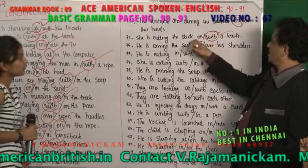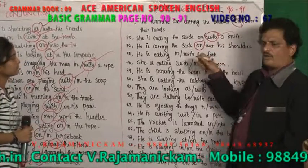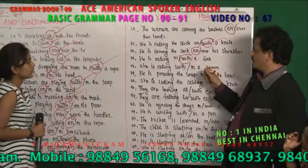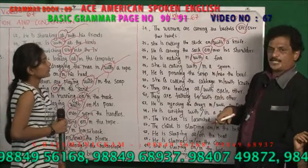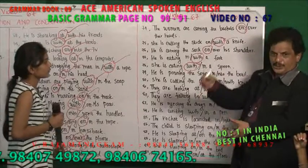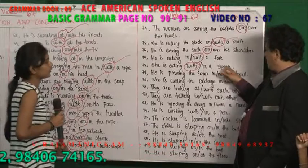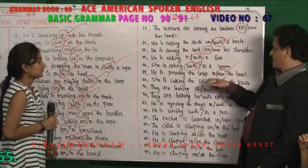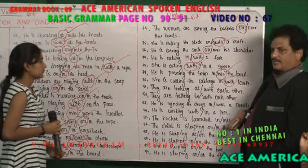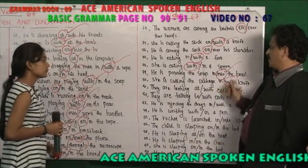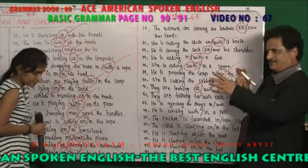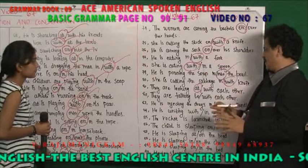He is eating with a fork or in a fork? 'With a fork.' She is eating with a spoon or in a spoon? 'With a spoon' — 'with' is used with an instrument. He is pouring the soup into the bowl or in the bowl? 'Into the bowl' — because it goes from top to bottom. She is cutting the cabbage with a knife or in a knife? 'With a knife' — 'with' is used with an instrument.